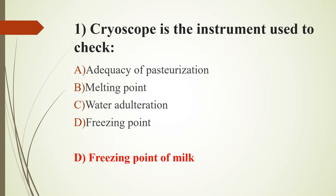Adequacy of pasteurization can be detected by the phosphatase test, which was briefly explained in the previous video — the link is in the description box. Water adulteration can be detected by the lactometer test.